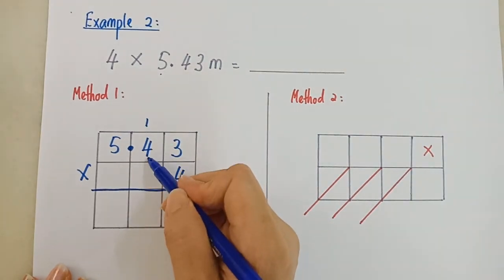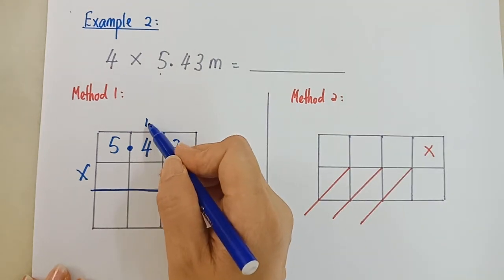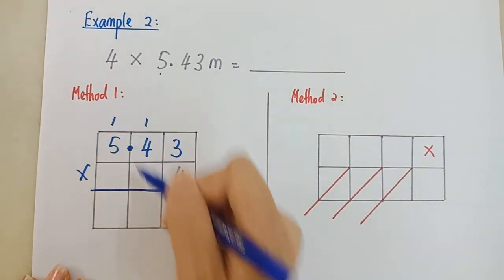Now darablah macam biasa. 4 times 3, 4 kali 3, 12. 12 kan? 1, 2. 4 times 4, 4 kali 4, 16 kan? Tambah 1. 17. 1, 7.